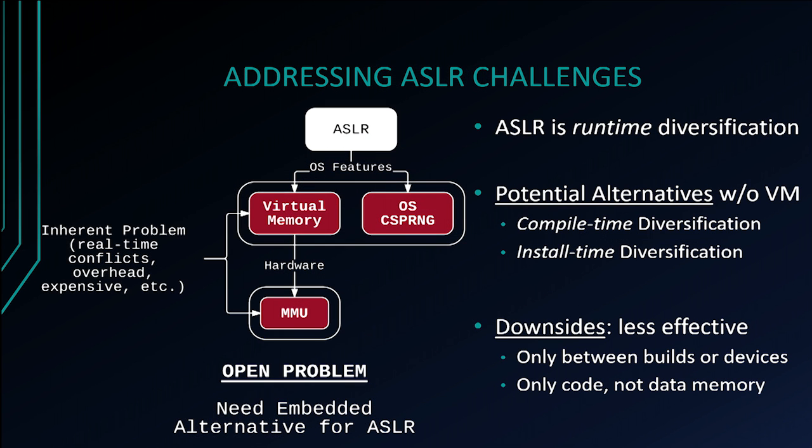For ASLR, the limitations are too fundamental. We likely won't see virtual memory adoption across all embedded operating systems, as it conflicts with real-time requirements. Similarly, MMUs won't be deployed in all hardware due to cost. So we need a real embedded alternative for ASLR. One approach is to think of ASLR as runtime diversification and instead pursue compile-time or install-time diversification, which doesn't require virtual memory. The downside is these are less effective, diversifying only between different software builds or devices — not different runs — and only code memory, not data memory.